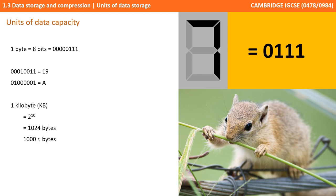A single byte, whilst useful for storing a single character, is not enough for other types of data, and therefore computers started using thousands of bytes of data called kilobytes. As the binary system is a base 2 number system, these larger units are 2 to the power 10 units. 2 to the power 10 is 1,024, so a kilobyte is actually 1,024 bytes and not 1,000. We tend to approximate a kilobyte to 1,000 bytes just for simplicity.